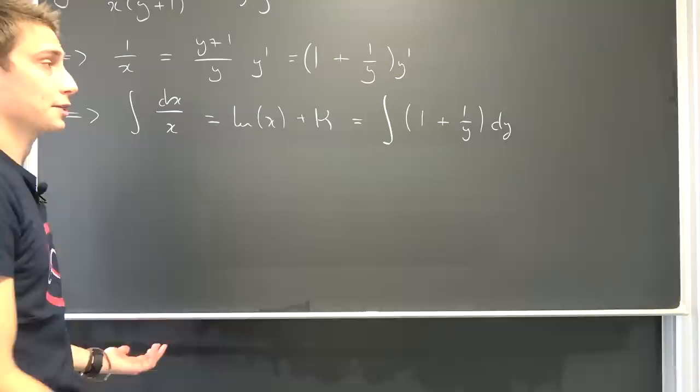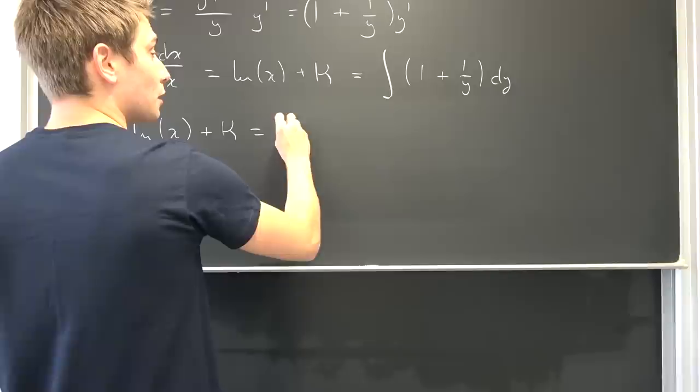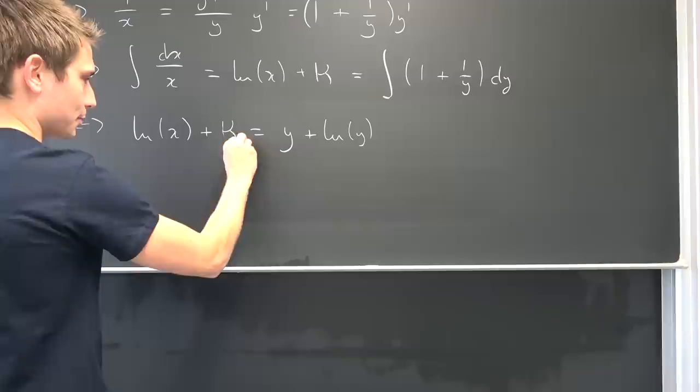Ending us up with the natural log of x plus kappa is equal to y plus the natural log of y plus some arbitrary constant delta. We can bring it to the other side and we are going to end up with a new constant kappa 2.